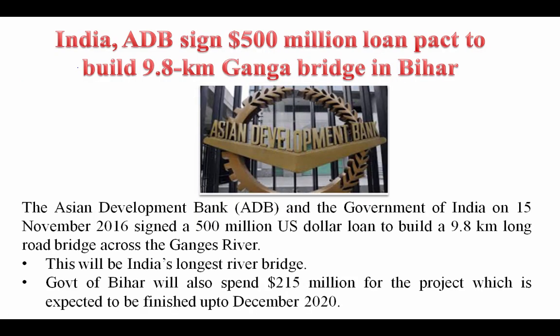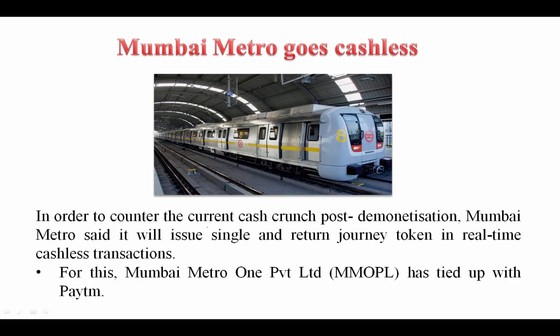India and the Asian Development Bank signed a $500 million loan pact to build a 9.8-kilometer Ganga bridge in Bihar on November 15. It will be the longest river bridge built on the Ganga river.